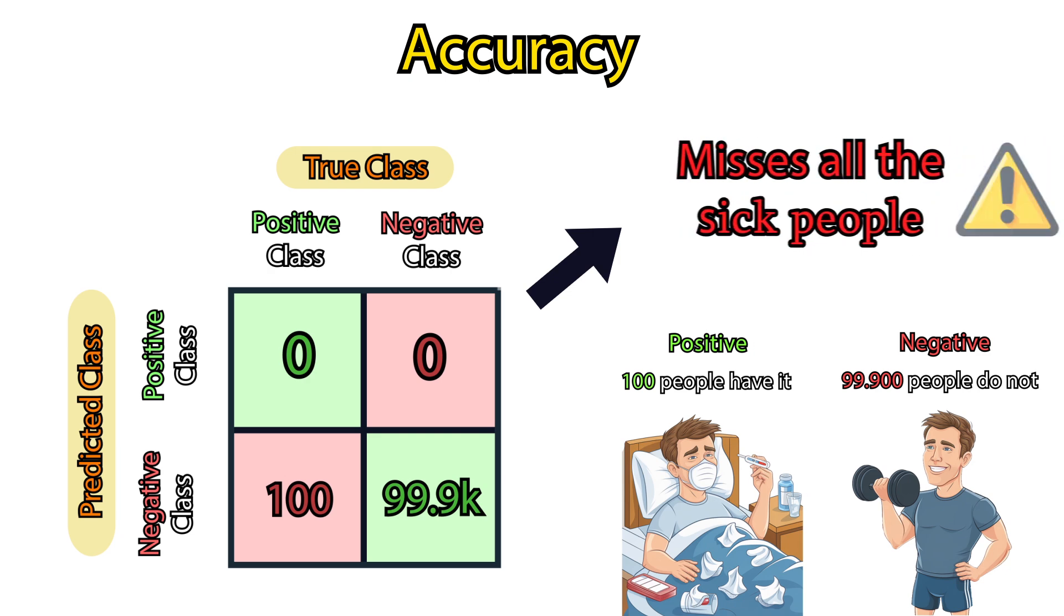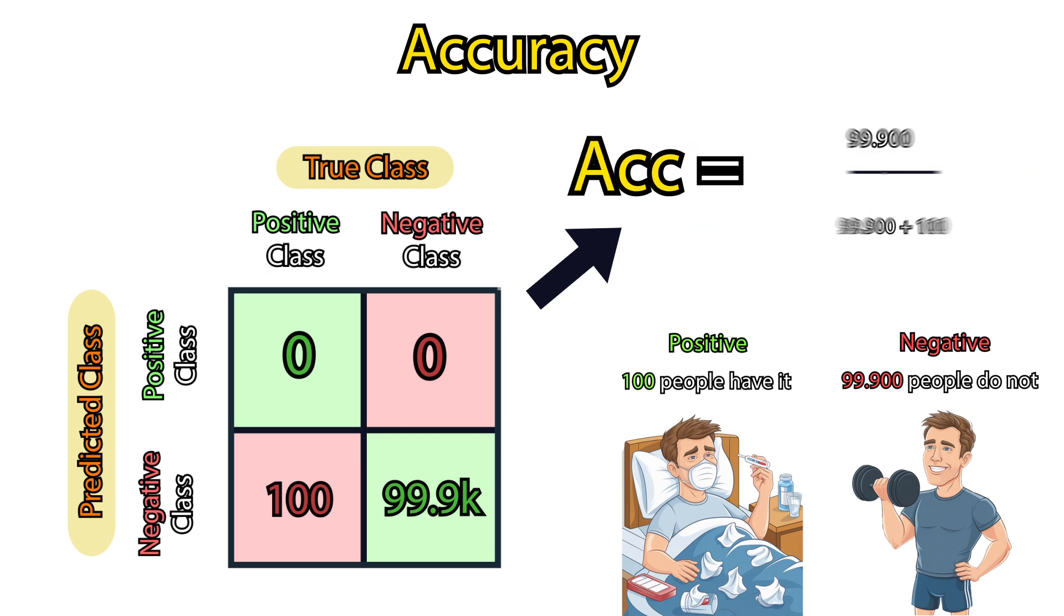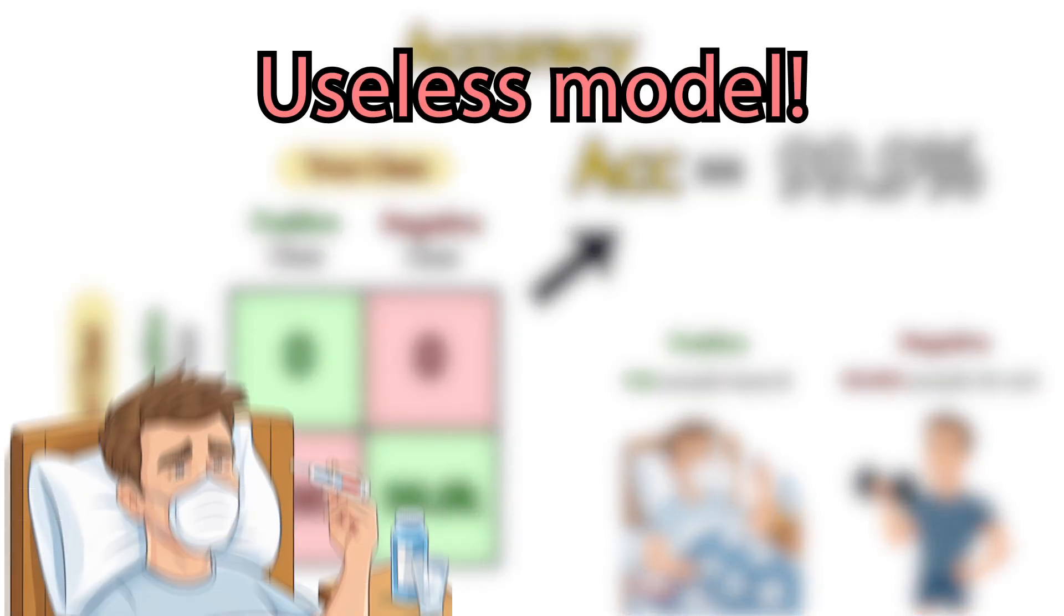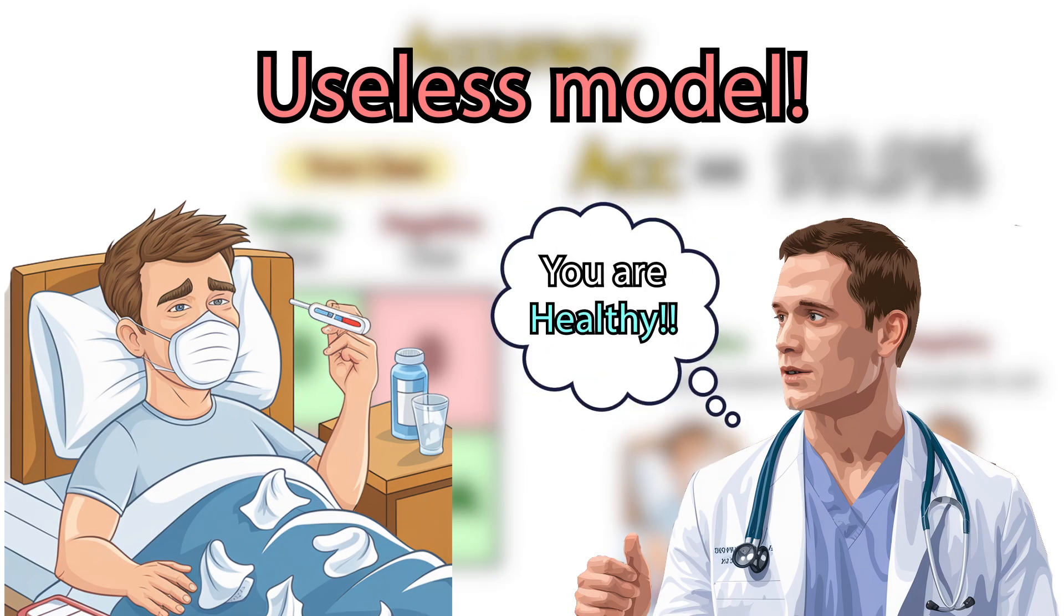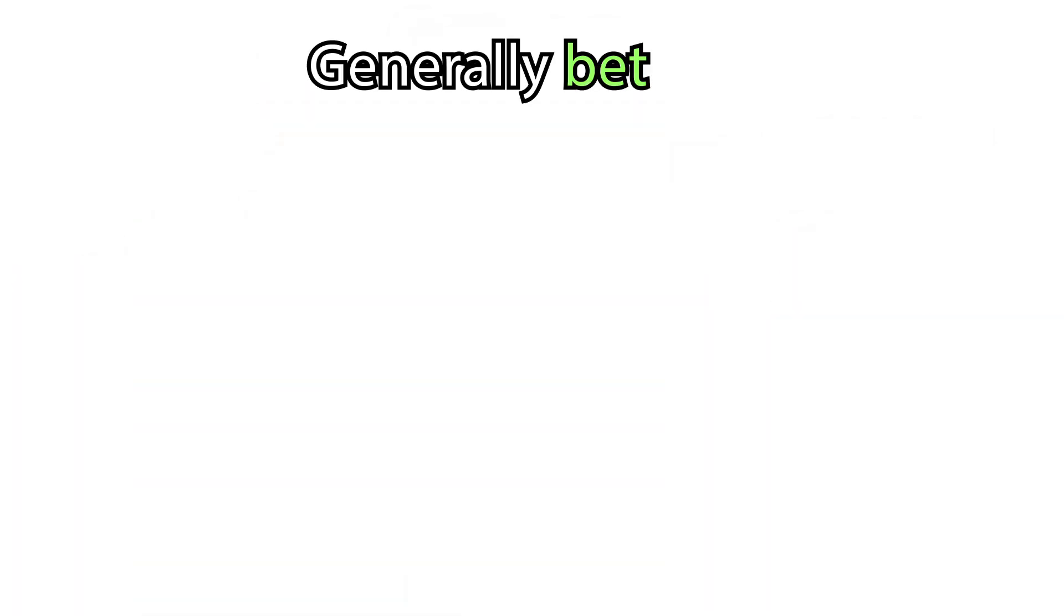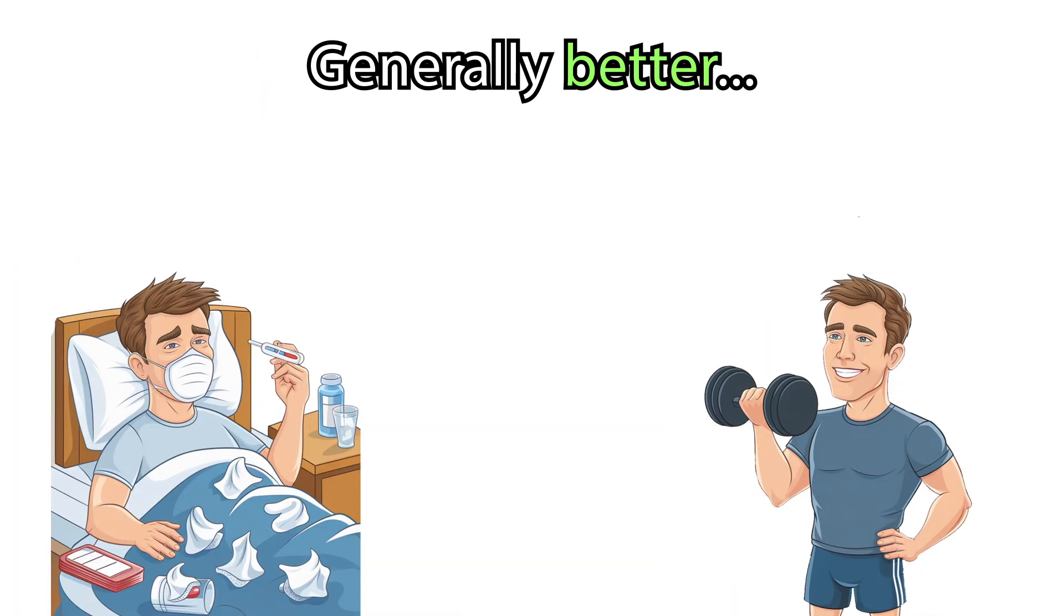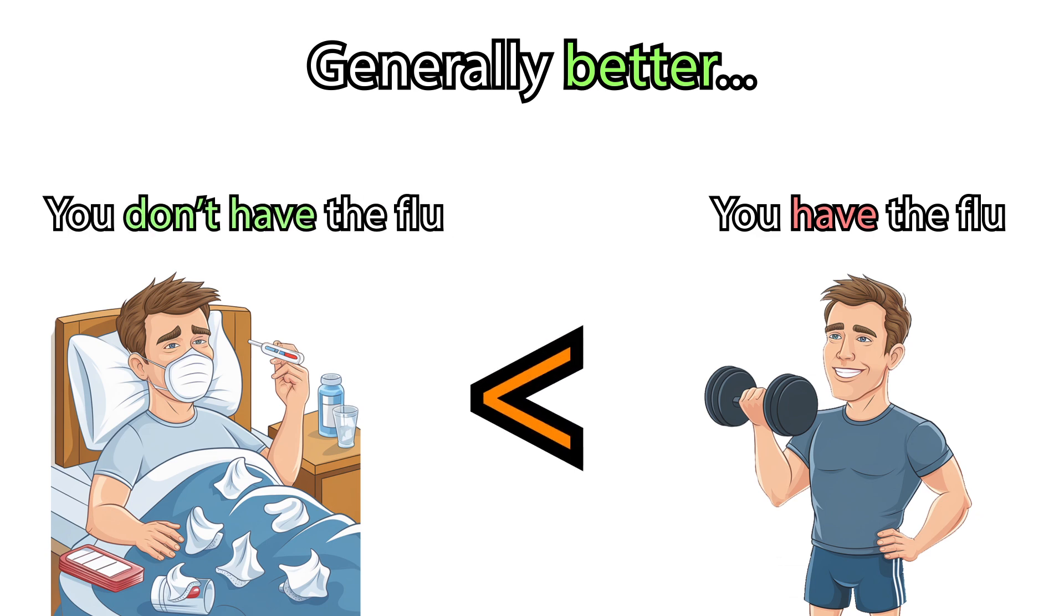When we calculate the accuracy score, we get a very high score. However, our model is useless. Imagine telling a person that he has no flu when he actually has. It is generally better in such cases to classify the person having the flu when he doesn't, than to miss a case where someone does have the flu, but the model says they don't.